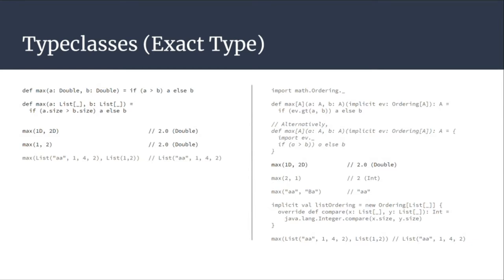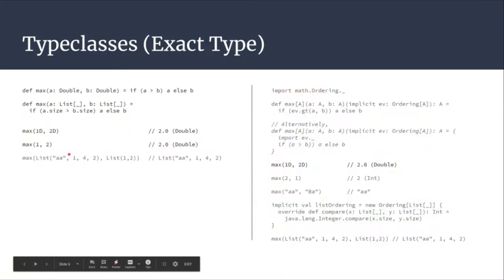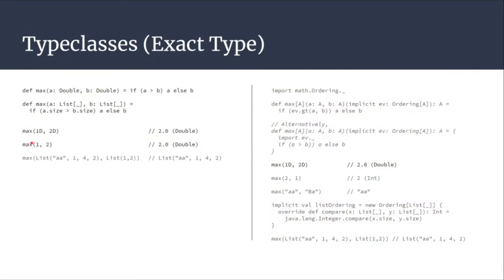But the thing here is — if you give an integer, you get a double back, and that doesn't make sense. This is just with numbers. What happens if you have something more complex, like a class or more complex objects? So if you use a type class — Ordering is a type class, it is sort of a trait.